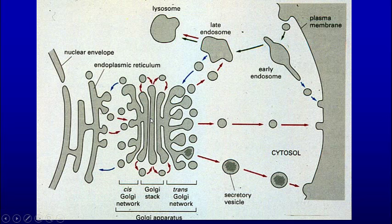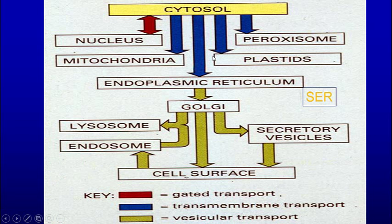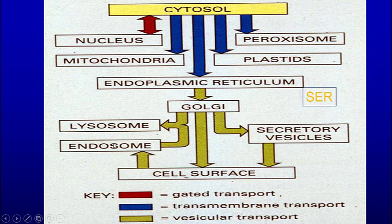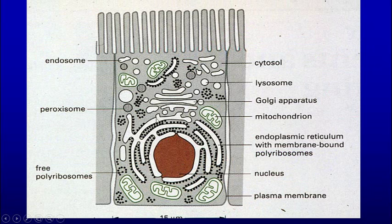In receptor-mediated endocytosis, cargo binds to the receptor, folds into a coated pit, forms a coated vesicle that uncoats, the pH is lowered, receptors are recycled, and cargo goes to the lysosome for degradation. The secretory pathway goes: nuclear envelope → rough endoplasmic reticulum → Golgi apparatus. From there, three paths exist: default constitutive exocytosis, signal-induced secretory granule exocytosis, or delivery to the lysosome. Mitochondria and peroxisomes get their proteins from the cytosol without using this pathway.